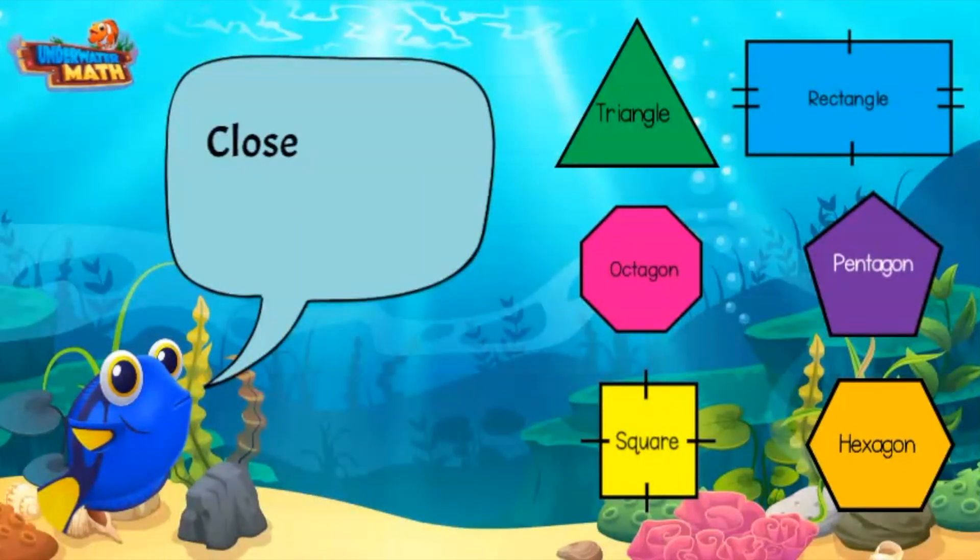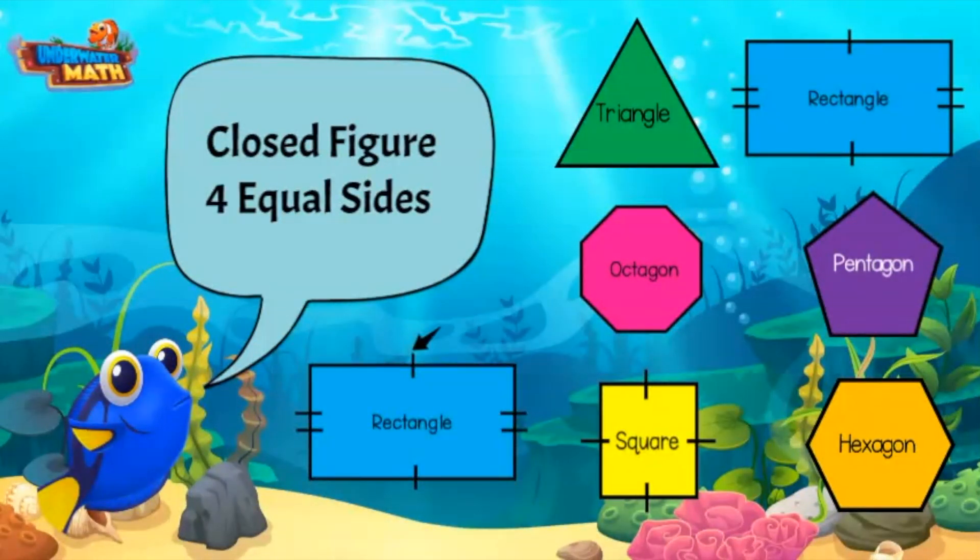Here is another one. A closed figure with four equal sides. Let's try a rectangle. It is a closed figure. These lines on the sides tell me the opposite sides of the rectangle are equal, but this does not fit the description that says all four sides are equal.